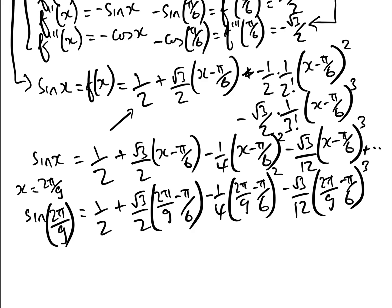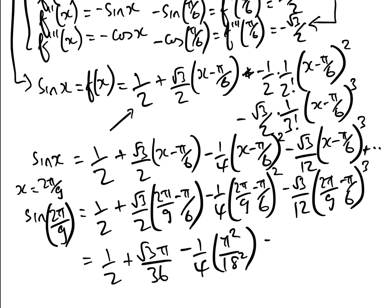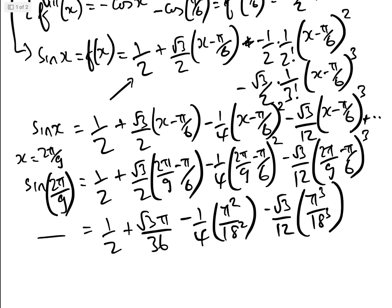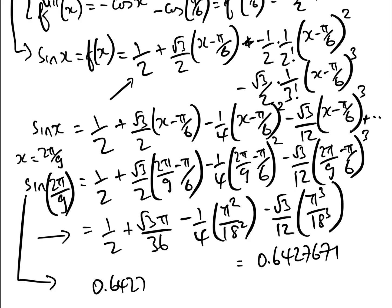Now 2π over 9 minus π over 6 equals π over 18, so that gives us one half, plus root 3 times π over 36, minus one quarter times π squared over 18 squared, minus root 3 over 12 times π cubed over 18 cubed. Using a calculator, this equals 0.6427671, and the actual value of sine of 2π over 9 is 0.6427876, so to 4 decimal places it is the same — a very good approximation.